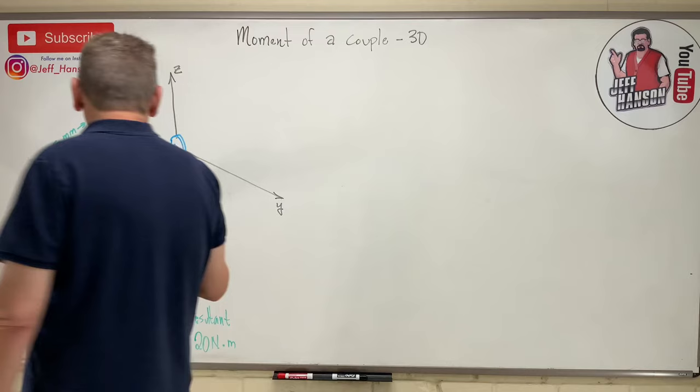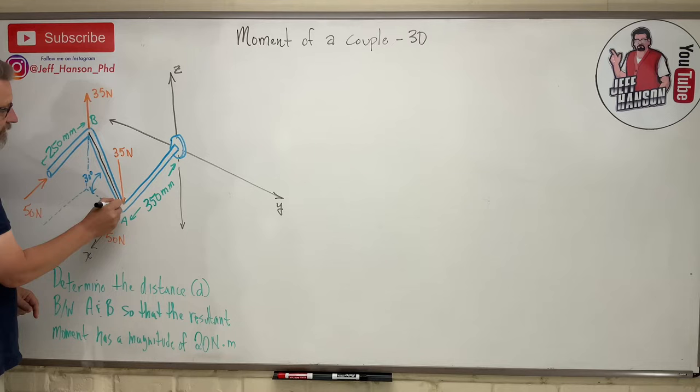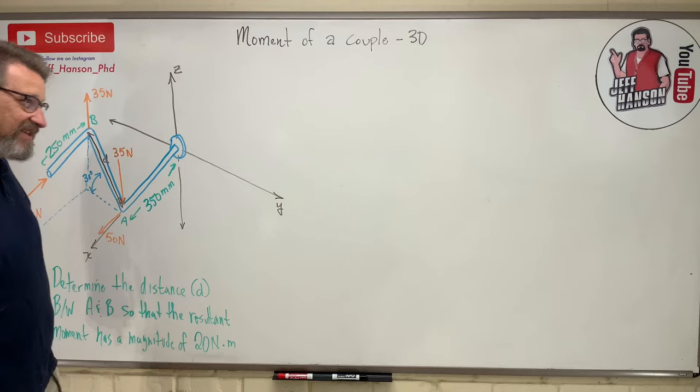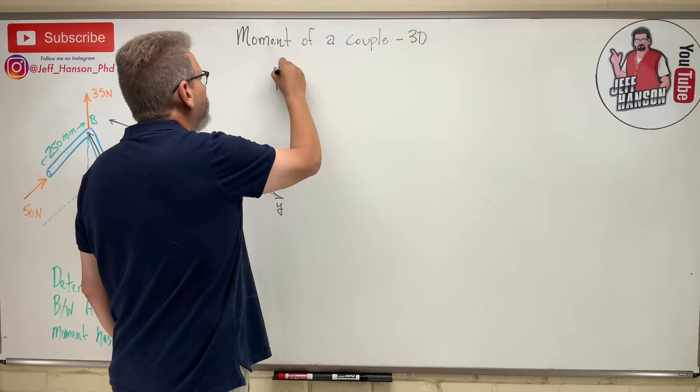This problem says determine the distance D, which is not given, but the distance D is from A to B. That's from that corner to this corner. So that the resultant moment has a magnitude of 20 Newton meters.